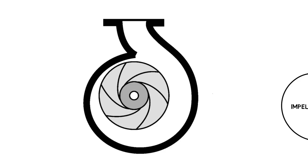Liquid entering a centrifugal pump's impeller can pass between the veins only once. Energy is added to the liquid as it travels from the center of the impeller to the rim.